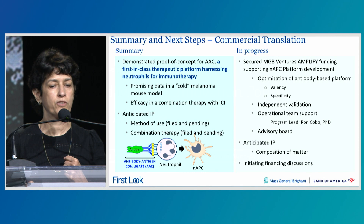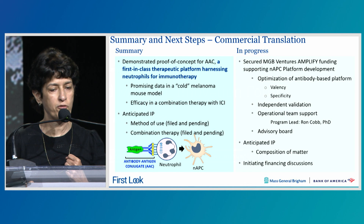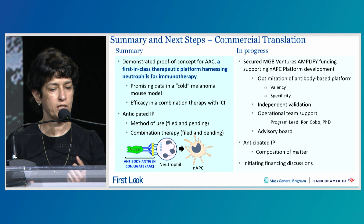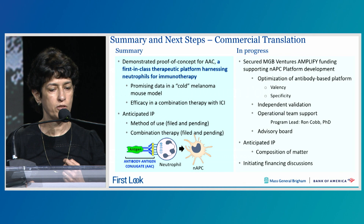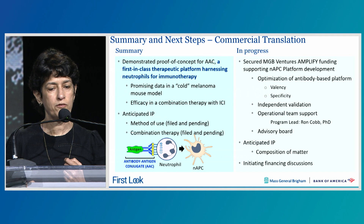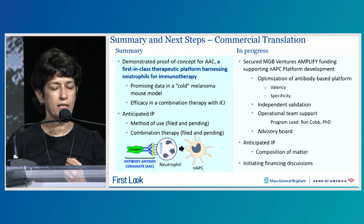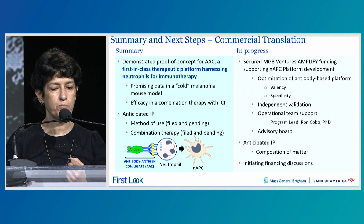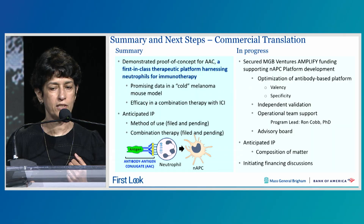In summary and next steps for commercial translation: we've demonstrated proof of concept for AAC, a first-in-class therapy harnessing neutrophils for immunotherapy, using a melanoma mouse model and showing efficacy of combination therapy. Anticipated IP is method of use in combination therapy, filed and pending. We have secured MGB Ventures Amplify funding for optimizing the antibody-based platform for valency and specificity, are working with CROs to validate and repeat our data, and are currently initiating financing discussions.